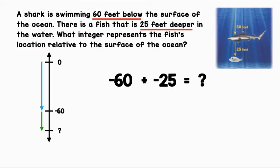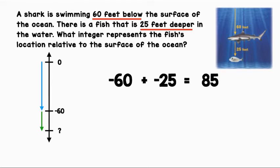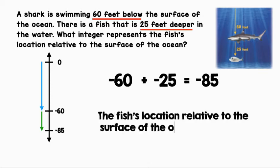First, let's find the sum of the absolute values: 60 plus 25 equals 85. Next, let's refer to the original expression and use the same sign: negative 85. The fish's location relative to the surface of the ocean is negative 85 feet.